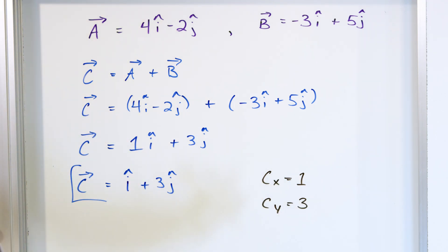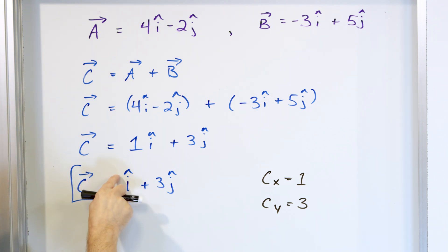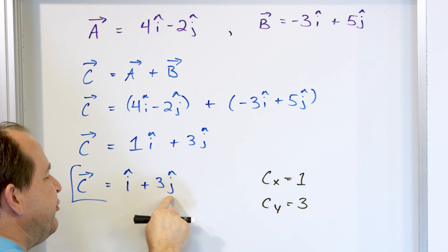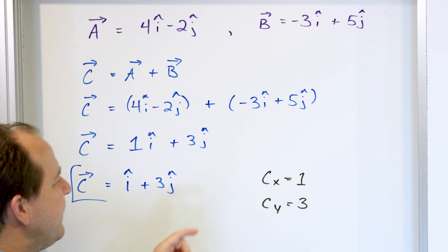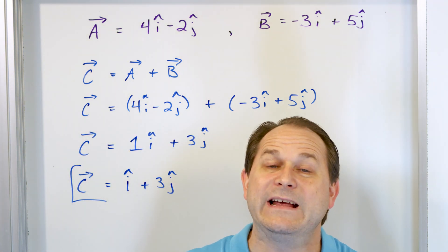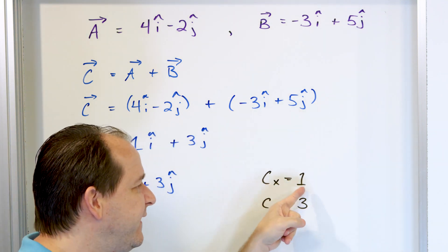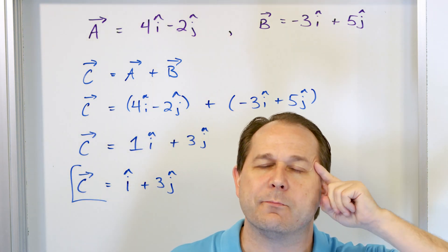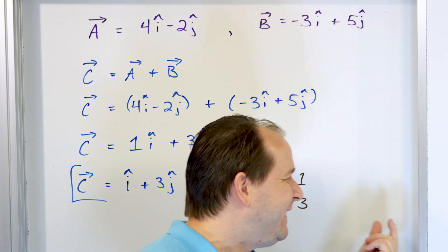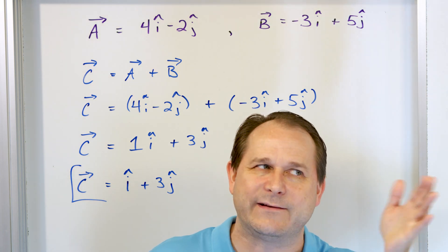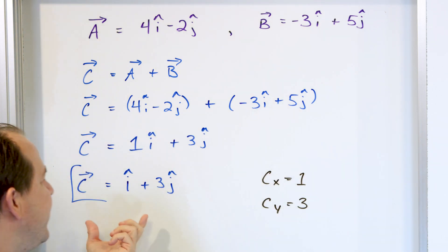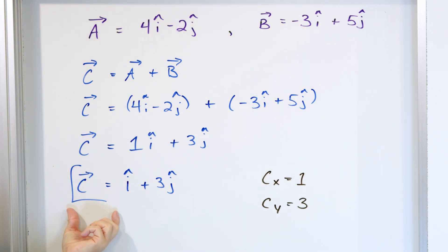This is the full vector representation pointing in a certain direction — a coefficient in the i direction and a coefficient in the j direction. When you list just the components, all the information is there because you know this is in the x direction and this is in the y direction. But those are just numbers; this unit vector form is the actual vector representation of where the thing points.